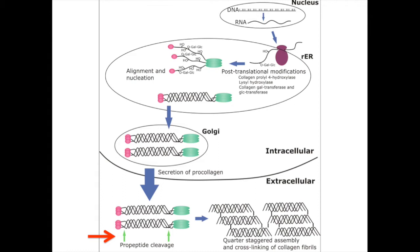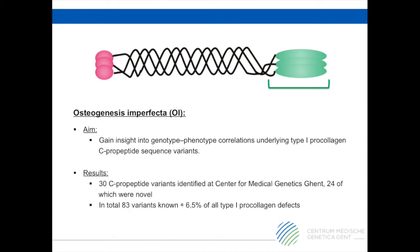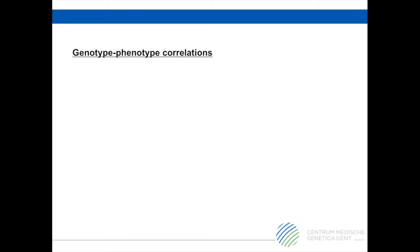Interestingly, only a small fraction of all known type 1 procollagen mutations reside in the c-propeptide domain. With our study, we aim to provide insights into the genotype-phenotype correlations underlying type 1 procollagen c-propeptide mutations. We reviewed the clinical, molecular and biochemical data on 30 c-propeptide variants identified at the Centre for Medical Genetics Ghent and compared our data with previously published data on c-propeptide mutations. The total number of type 1 procollagen c-propeptide variants identified is 83, which constitutes approximately 6.5% of all type 1 procollagen defects.